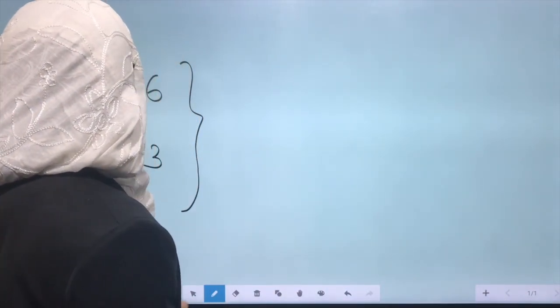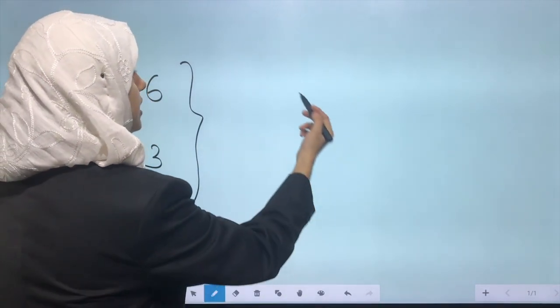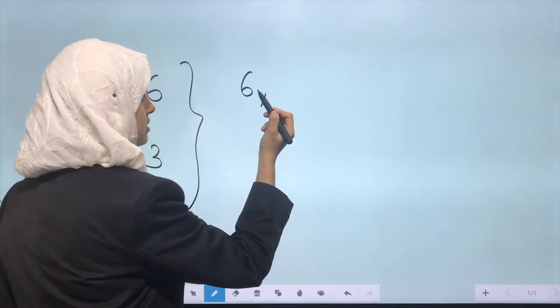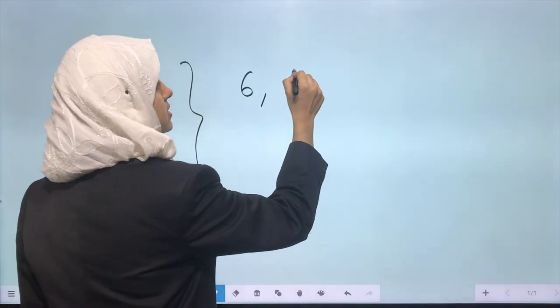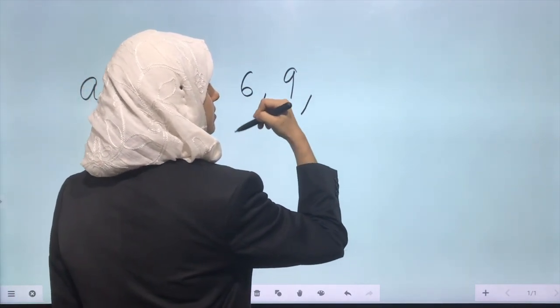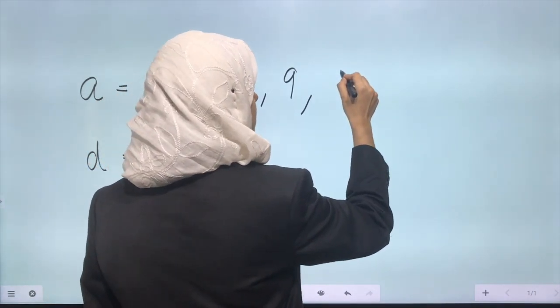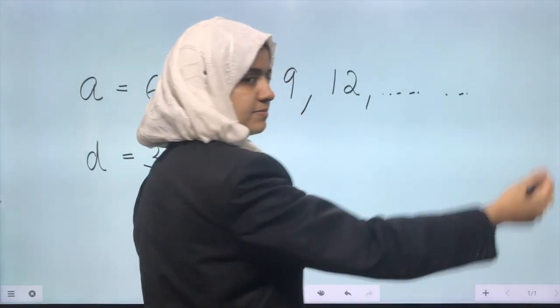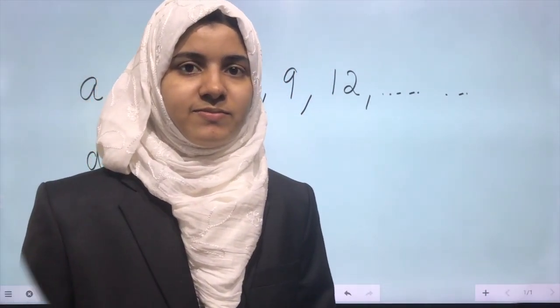So a = 6 and d = 3, then you can write the AP. First term is 6, second term is 6 plus 3, which is 9. Third term is 9 plus 3, which is 12, and it goes on if it's an infinite AP. Clear? Okay guys.